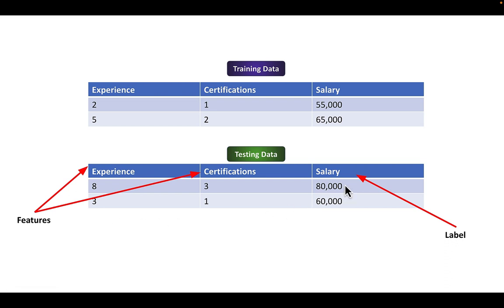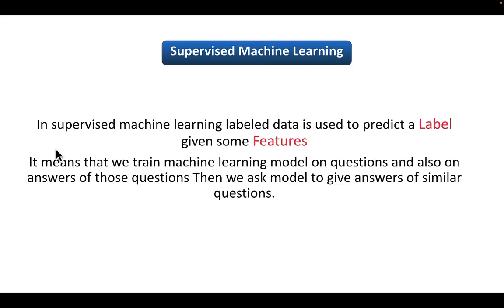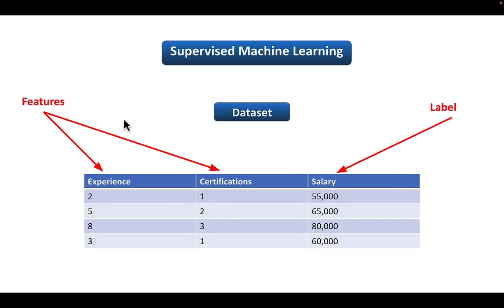The label is the value we are predicting, and features are the columns or values using which we are making the prediction. In supervised machine learning, labeled data is used to predict a label given some features. This means we use a dataset where we have both features and the label. We pass both features and the label to our machine learning algorithm, and our algorithm finds the pattern based upon those inputs and outputs, giving us our trained model.